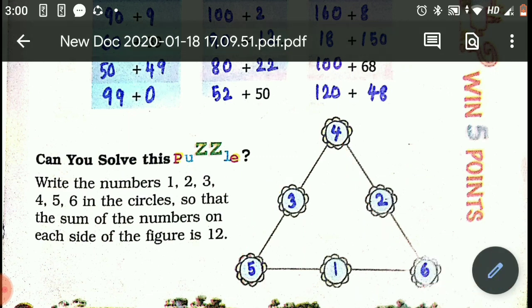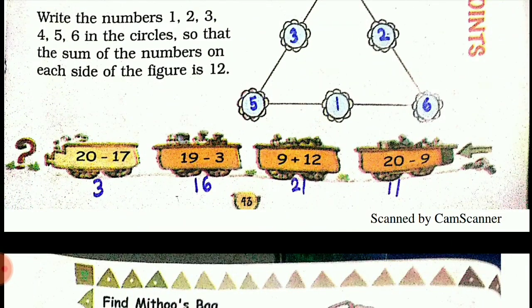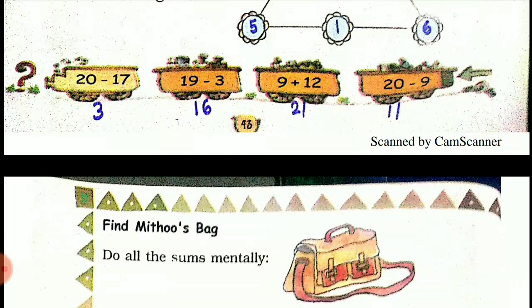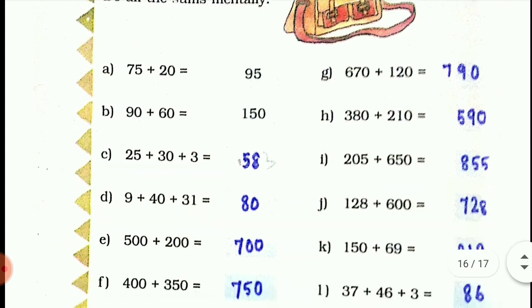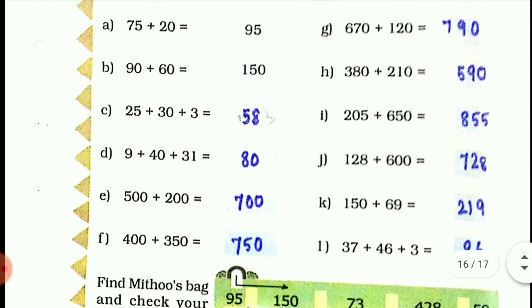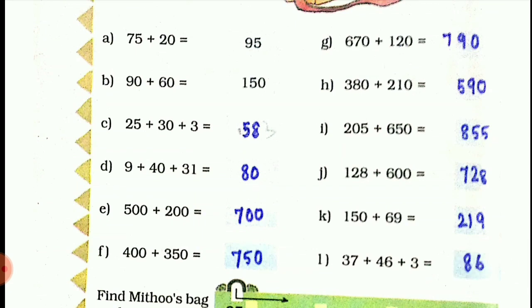Next, this is simple subtraction. You can just subtract and check the answer. 20 minus 17 is 3, 19 minus 3 is 16, 9 plus 12 is 21, 20 minus 9 is 11. Do all these sums mentally. See here, they have asked us to solve mentally. 75 plus 20: first you can think about 70 plus 20 is 90, and then plus 5 is 95. The remaining you can just solve and check the answers: 150, 58, 80, 700, 750, 795, 98, 55, 728, 219, 856. Please just pause the video and check all the sums.